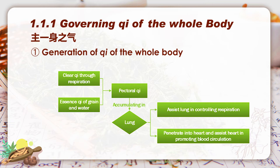So, clear qi, or fresh air, combines with essence qi, and they make up the pectoral qi — zhong qi — as named in TCM, which accumulates in the lung and in turn plays a role in assisting lung to keep regular respiration and also assisting the heart qi to promote blood circulation. Therefore, from this perspective, pectoral qi is the qi of the whole body, which sources from both air and food, and is originally formed in the lung.